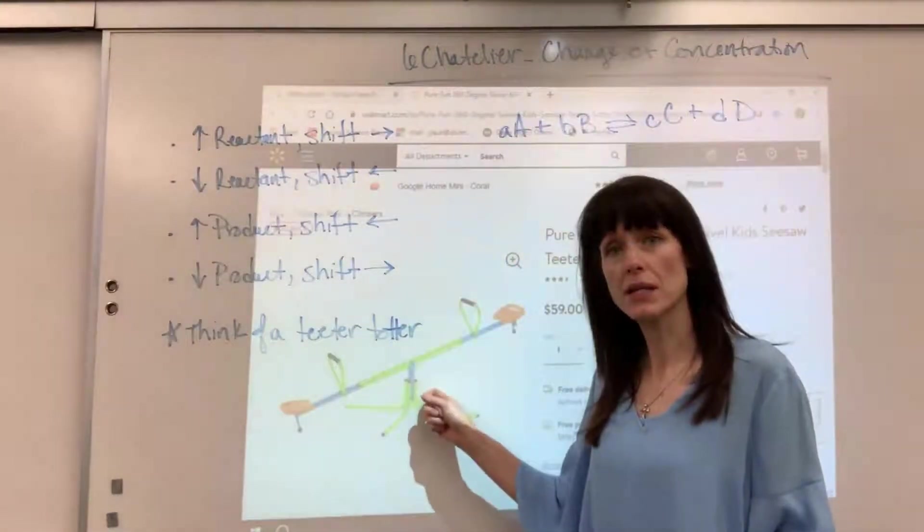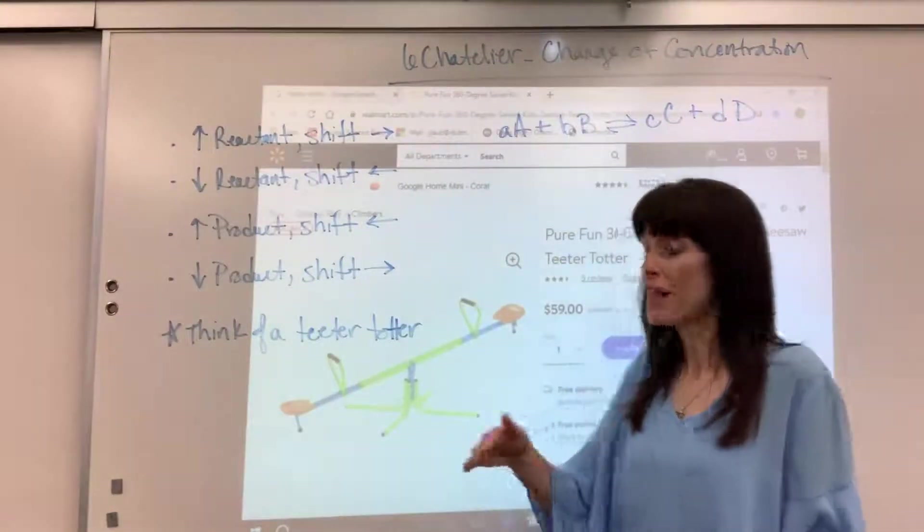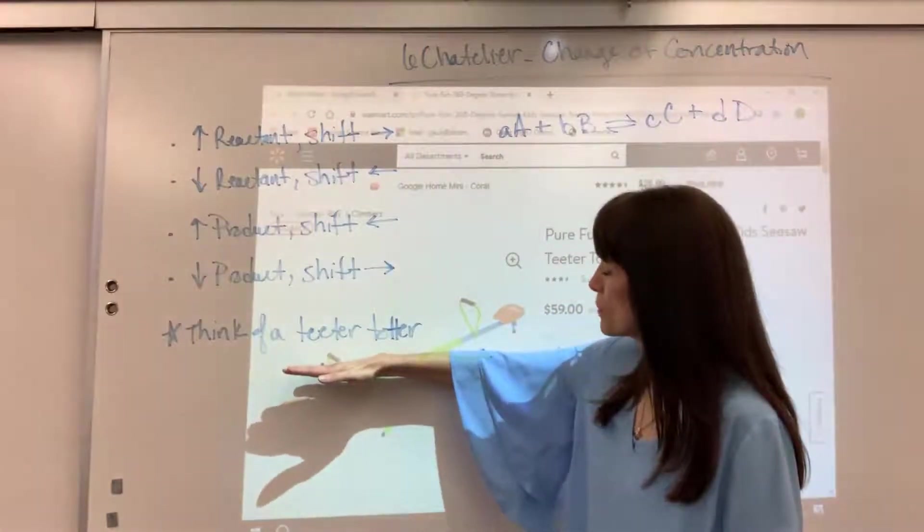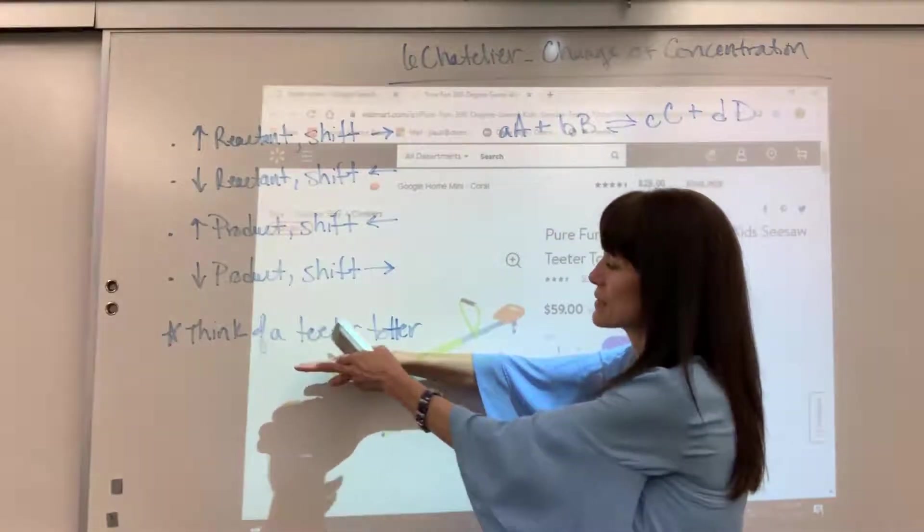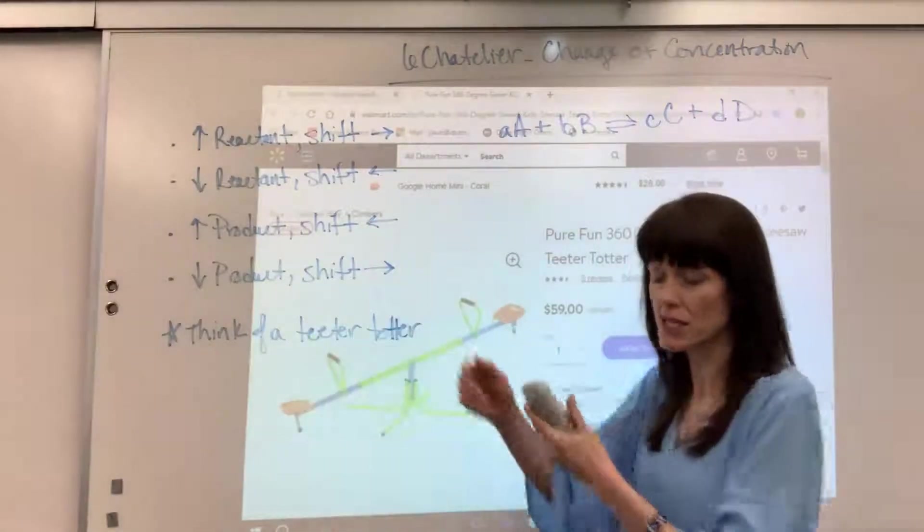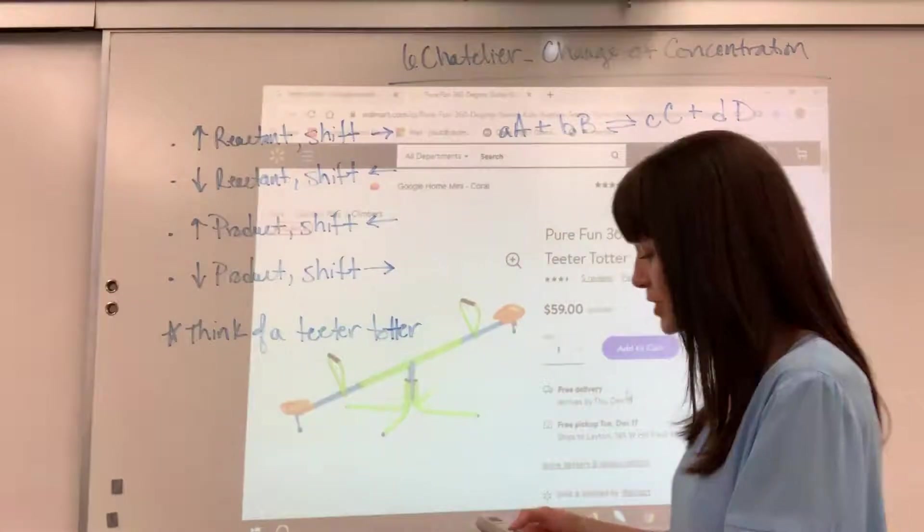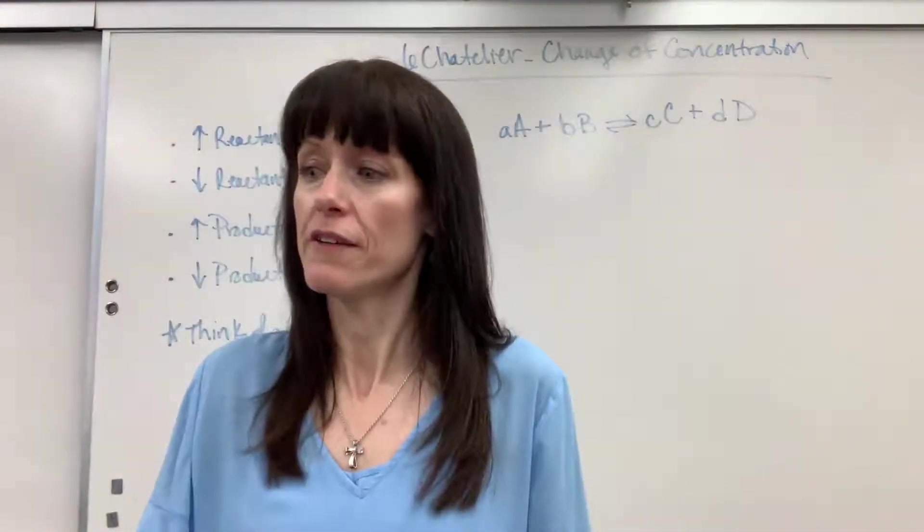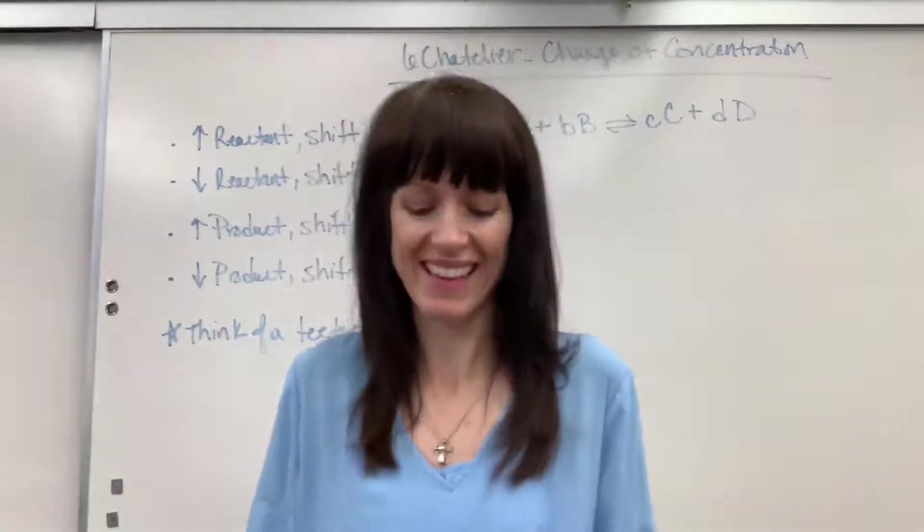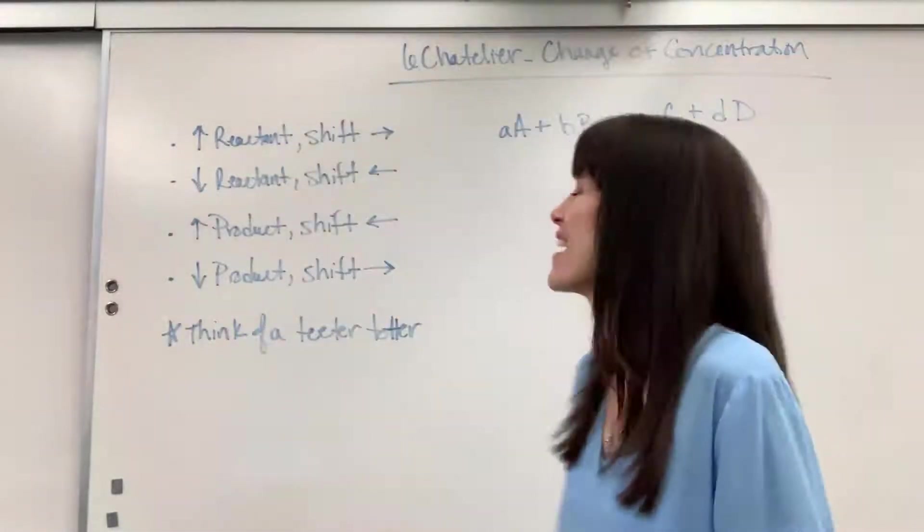But this is what I want you to think about. At equilibrium, that is only have that beautiful equal rate. And I want you to think about that teeter-totter that is completely level. So that's the visual that we're going to use on this.